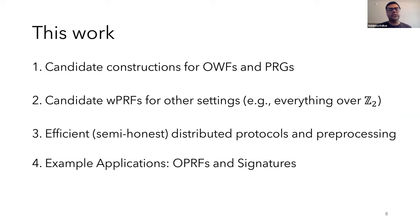While Boneh et al. only considered PRFs, we asked whether we can construct simple candidates for other primitives, like one-way functions and pseudorandom generators. We'll also present a candidate weak PRF, where the key input and output are all over Z2. So this is useful for settings where the output of the first PRF evaluation is kept secret and fed in as input into the second evaluation. So for all of our candidates, we perform substantial cryptanalysis and use that to inform our parameter choices. And we'll give efficient distributed protocols for several settings with and without preprocessing. All of the protocols will only consider semi-honest parties. And finally, we'll talk about some applications. Two primary applications we considered are OPRFs and signatures.